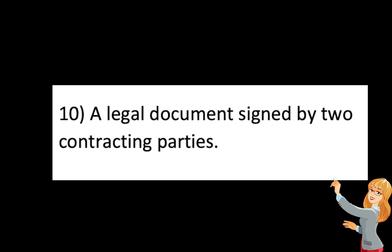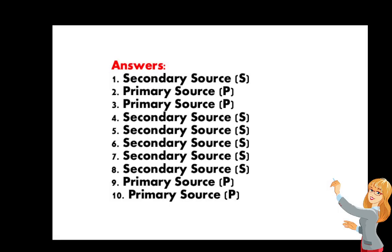You have 10 seconds to finalize your answers from 1 to 10. After that, the key to correction will be revealed. Check how many you got: 10 is excellent — you truly understand primary and secondary sources. 9 is very good. 8 is good. 7 is fair. 6 needs improvement. From 6 down to 1, you should rewatch this video, especially the previous vlog.